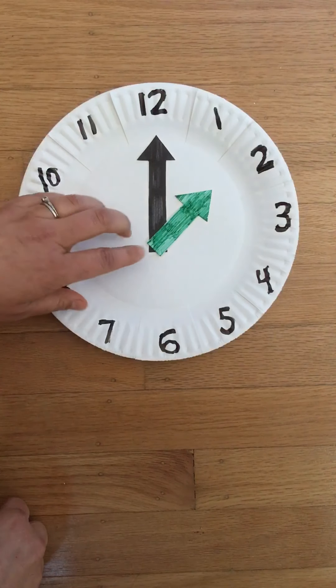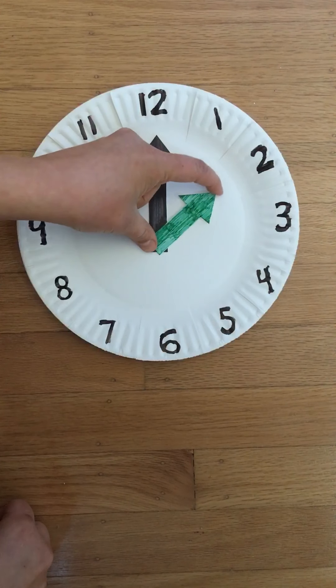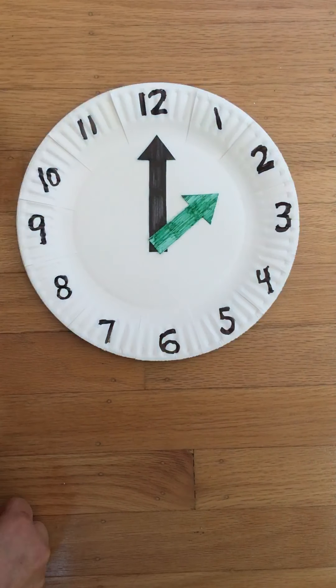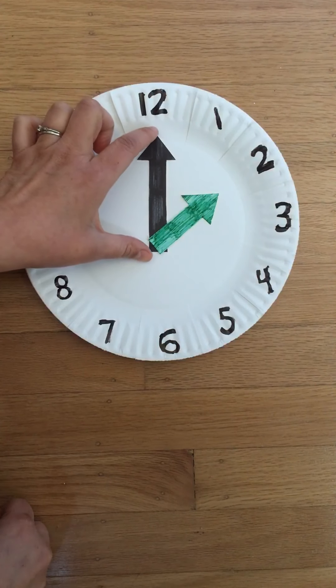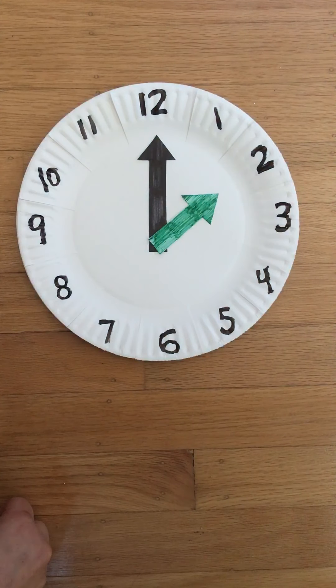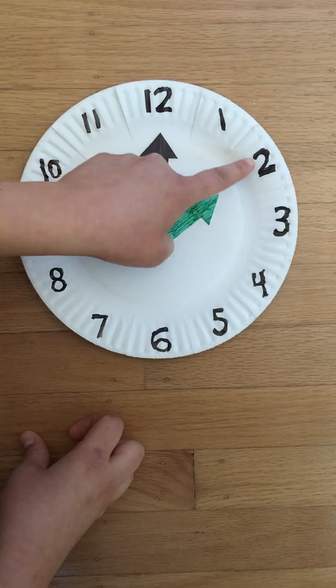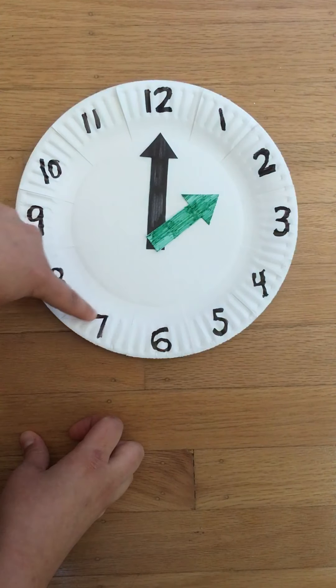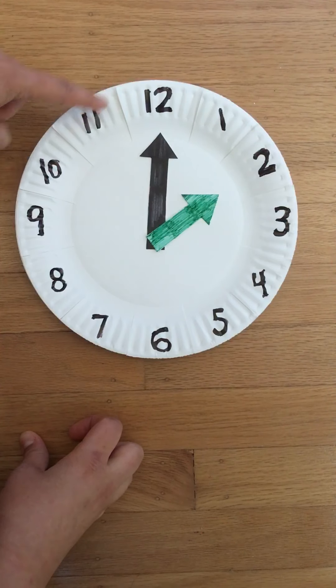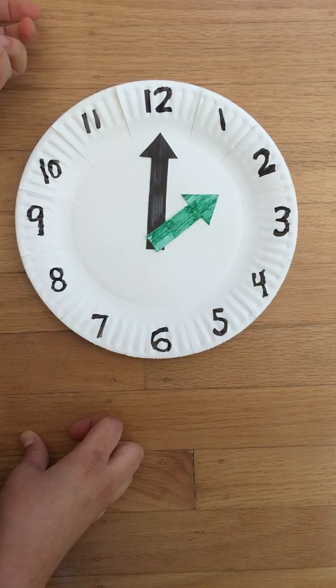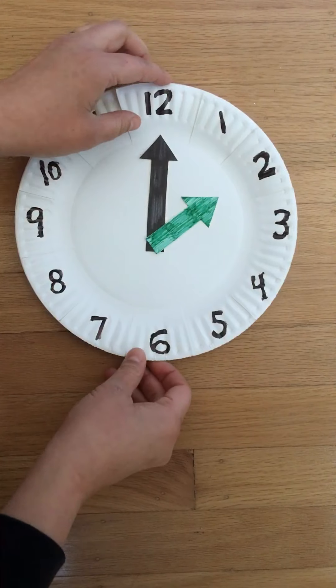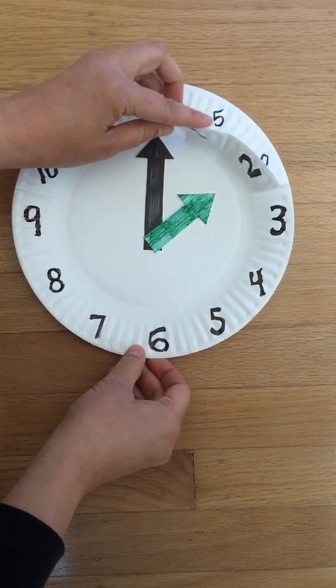So just a quick review before we start. The short hand is the hour hand. The longer hand is the minute hand. On our clock we have 12, 1, 2, 3, 4, 5, 6, 7, 8, 9, 10, 11, 12. Those are referred to as the hours. And what's underneath it would be the minutes.